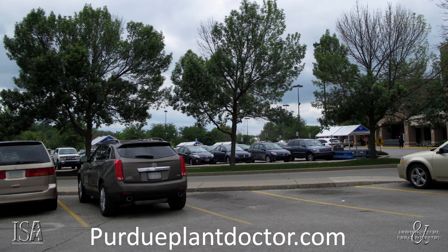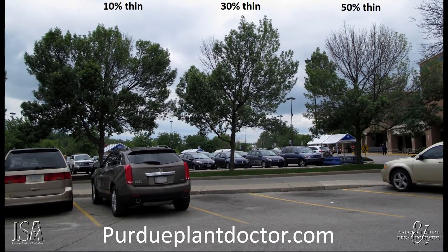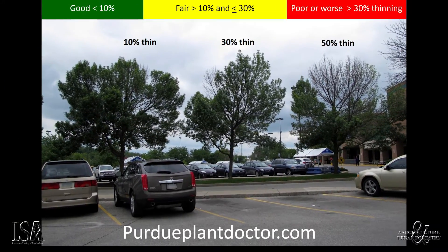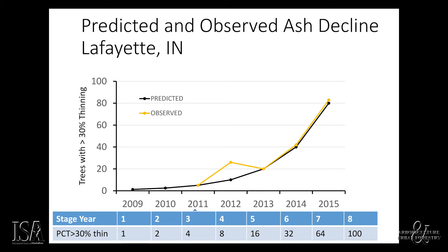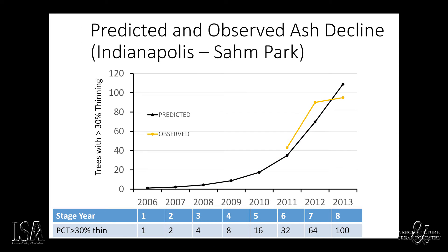To help cities preserve their ash trees before removal, we wanted to determine whether this model could estimate the accumulation of trees that had lost more than 30% of their canopy — the level at which it becomes too late to save an ash tree with insecticides. We identified 50 trees that had lost less than 10% of their canopy and another 50 that had lost less than 30%, and tracked them over time in two cities. In Lafayette, Indiana, with the exception of 2012 — a historic drought — the model accurately predicted the accumulation of untreatable trees over five consecutive years. In Indianapolis, this approach accurately assessed the status of ash decline six years after it was detected in the city, but by then it was too late to launch a successful treatment program.